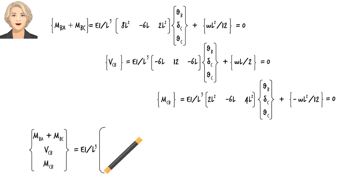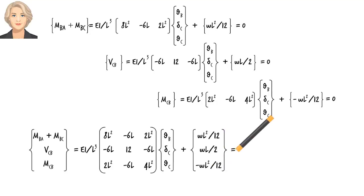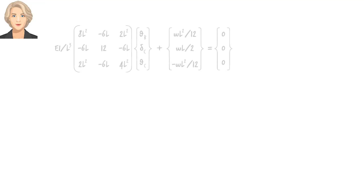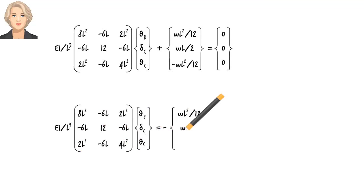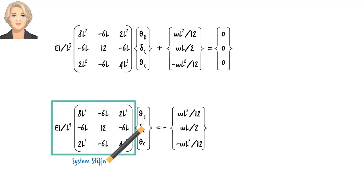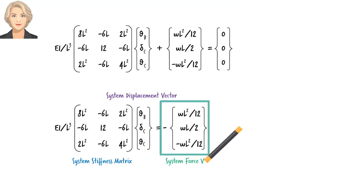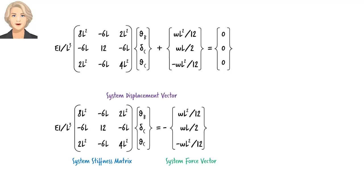Given the three equilibrium equations in matrix form, we can concatenate them to get our system of linear equations. This is called the System Stiffness Matrix, this is the System Displacement Vector, and this is the System Force Vector. There are various methods for solving such a system of equations. If you are solving by hand, Gaussian Elimination would be a good technique. I am going to assume you know how to solve this already and just present the results.